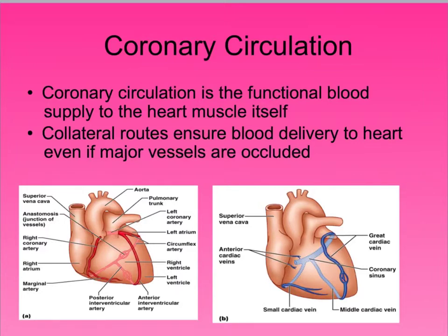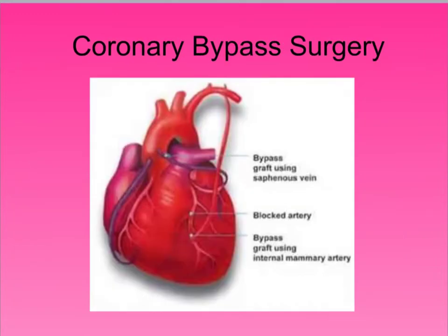Coronary circulation is circulation to the heart itself, and this is where heart attacks happen. If one of these arteries gets blocked with plaque or a blood clot, it can cause total blockage of blood flow. That starves the heart muscle of oxygen and it can't work. A coronary bypass addresses this — surgeons take a graft, usually the saphenous vein from your leg, and route it around the blocked artery to restore blood flow.